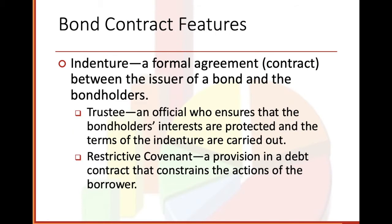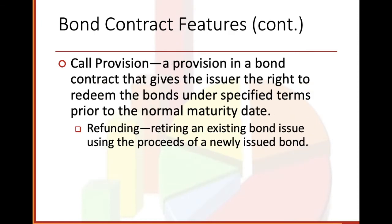Bond contract features: indenture — a formal agreement contract between the issuer of a bond and the bondholders. Trustee — an official who ensures that the bondholders' interests are protected and the terms of the indenture are carried out. Restrictive covenant — a provision in a debt contract that constrains the actions of the borrower. Call provision — a provision in a bond contract that gives the issuer the right to redeem the bonds under specified terms prior to the normal maturity date. Refunding — retiring an existing bond issue using the proceeds of a newly issued bond.